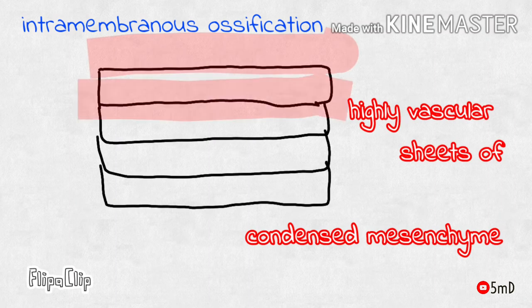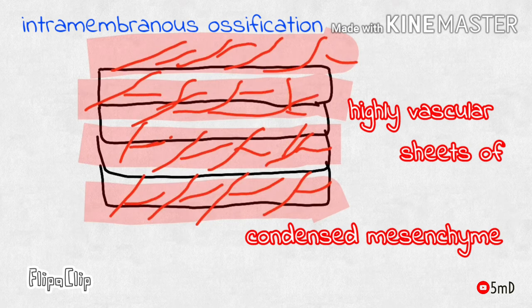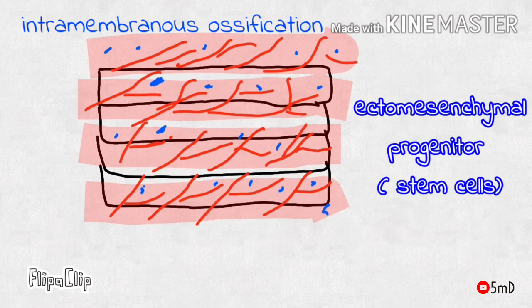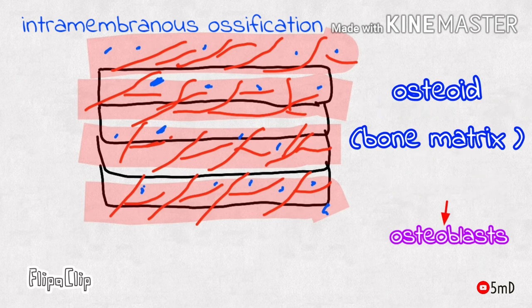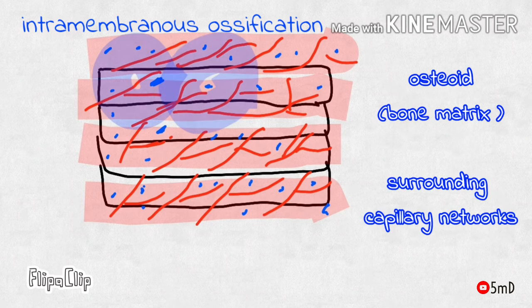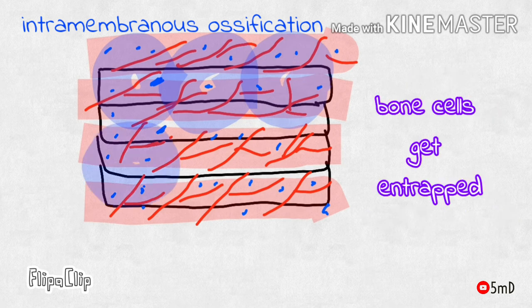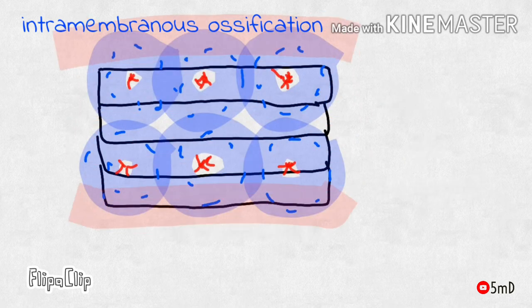To begin with, there are highly vascular sheets of membranes consisting of condensed primitive mesenchyme with capillary networks. Surrounding these capillary networks, ectomesenchymal stem cells or progenitor cells differentiate into osteoblasts, which take up the duty of secreting osteoid — unmineralized bone matrix — surrounding these capillary networks. The capillary networks are retained within the matrix.